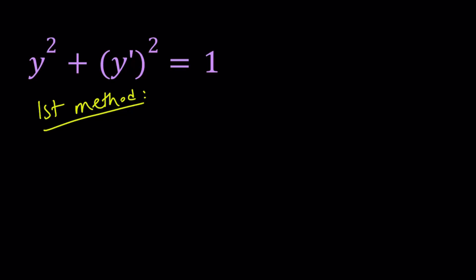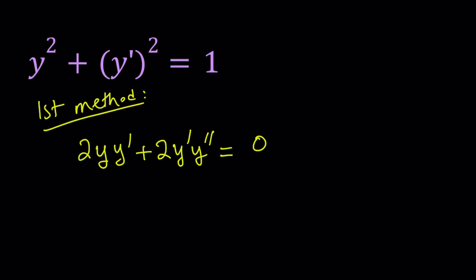If you differentiate y squared implicitly, because y is a function of x, we use the power rule first and then multiply by the derivative of the inside — that's the chain rule. So the derivative of y squared is 2y times y prime. The same rule applies to y prime squared, giving 2y prime times y double prime. And since 1 is a constant, its derivative is 0.